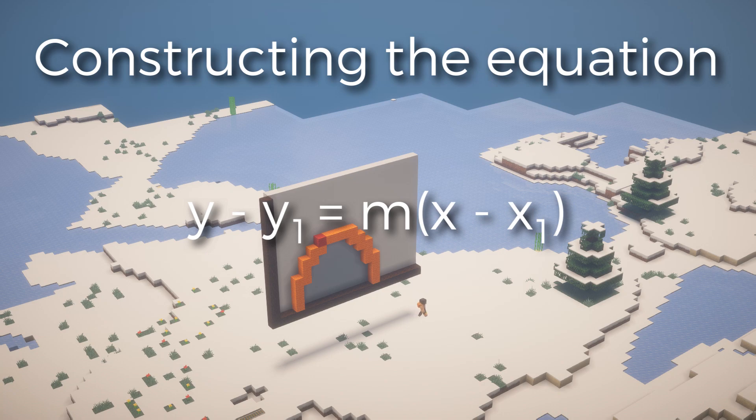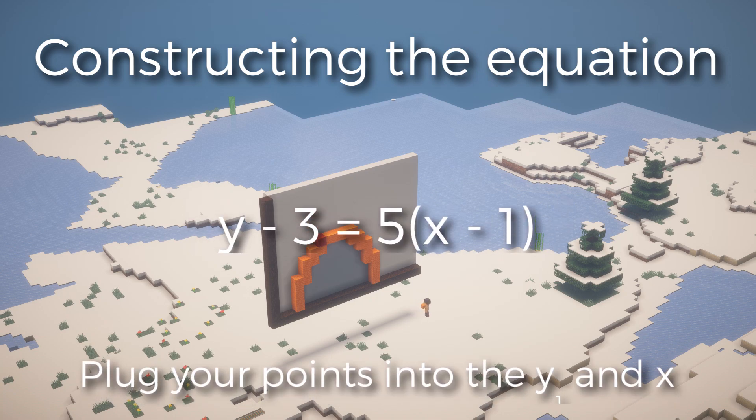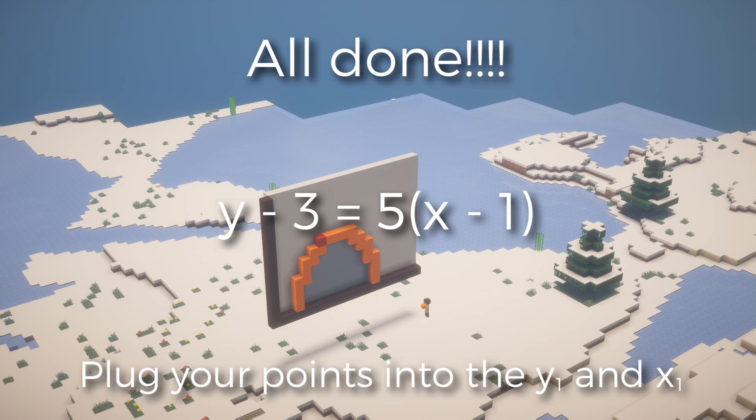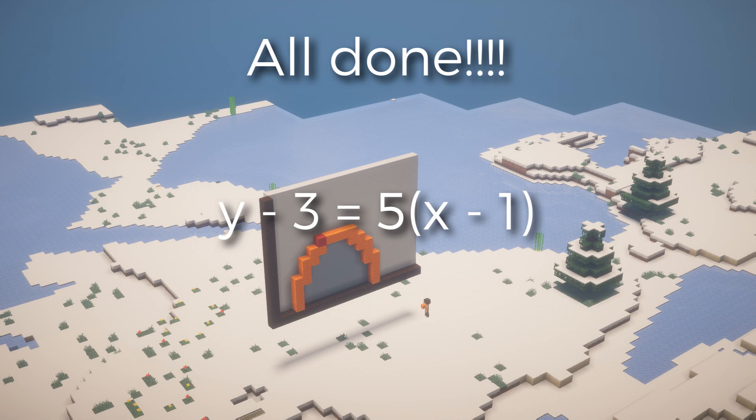So using this formula, we use our values from before to acquire a final equation of y minus 3 equals 5 times x minus 1. So now this is the equation of the tangent line. We've finished the question already.